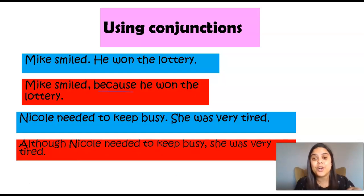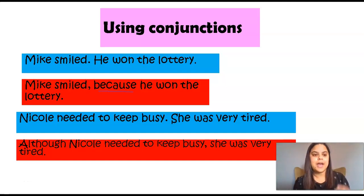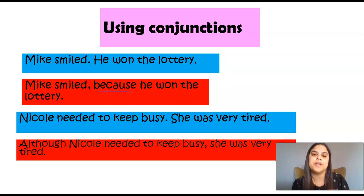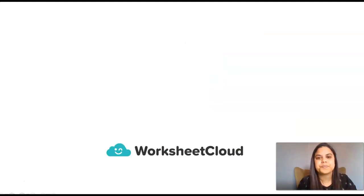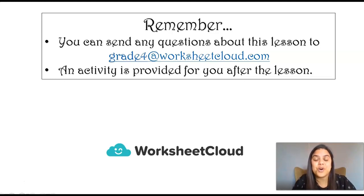I hope that makes sense. We will be going into more detail on conjunctions in another lesson, grade fours, because conjunctions can become a little bit complicated. For now, I just want you to know the basics of conjunctions, how to identify them, the different types of conjunctions, and in our next lesson we'll look at how to use them in different sentences. Remember, if you have any questions or concerns about this lesson, you can send them to grade4 at worksheetcloud.com. An activity is provided for you after this lesson, so please do it to get into the habit of understanding and identifying the types of conjunctions.